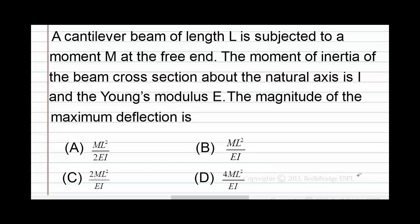A cantilever beam of length L is subjected to a moment M at the free end. The moment of inertia of the beam cross section about the neutral axis is I and the Young's modulus is E. The magnitude of the maximum deflection is: Option A: ML²/2EI, Option B: ML²/EI, Option C: 2ML²/EI, Option D: 4ML²/EI.